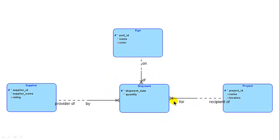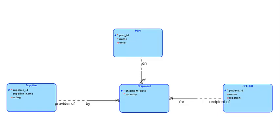Notice the associative entity notation: shipment has key migration from all of these different entities. Every shipment must be by a supplier, of a part, to a project. Notice also that the same supplier may supply the same part to the same project many times — today 100 units, one week later 200 units of the same part to the same project. So you'd have two occurrences where supplier number, part number, and project number are all the same, meaning that combination cannot be the primary key.